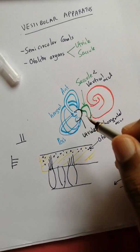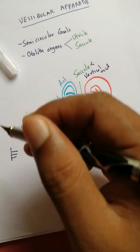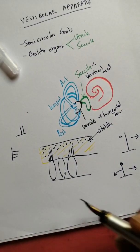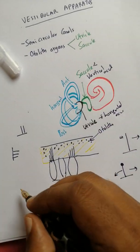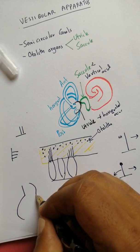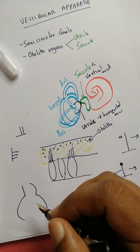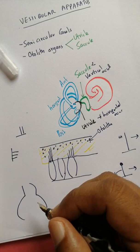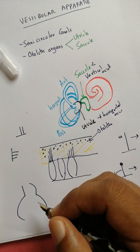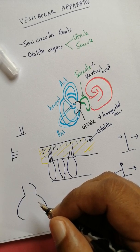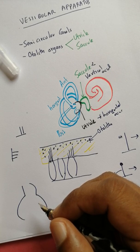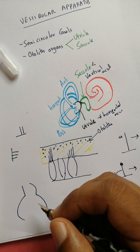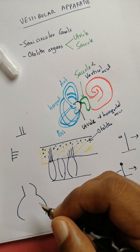In the semicircular canals, if you look here, you can see that they have a swelling at the bottom. That's known as the ampulla. Inside the ampulla you have the hair cells of the semicircular canals.